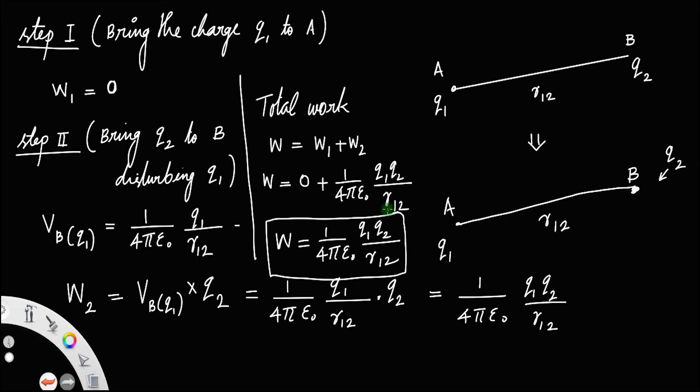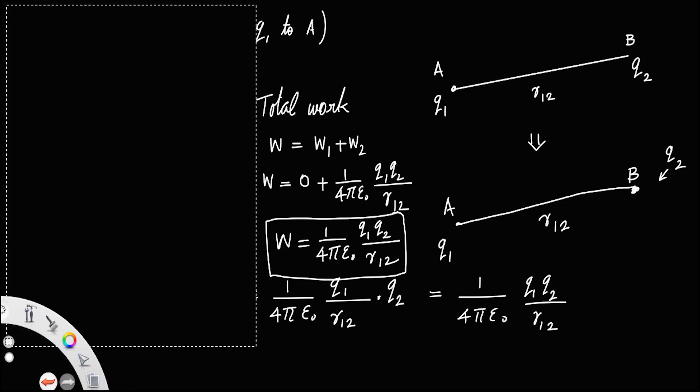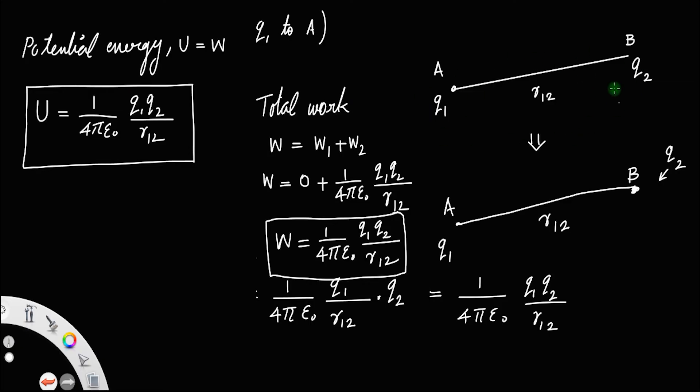So, from the conservation of energy, we know that the work done is stored as potential energy. That is work done to bring this configuration is stored as potential energy. So, the potential energy, usually represented by the letter U, will be the work done. So, U is equal to 1 by 4 pi epsilon 0 q1 q2 divided by r12. This is the expression for potential energy of a two charge system.